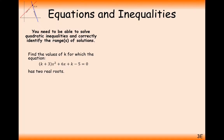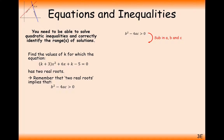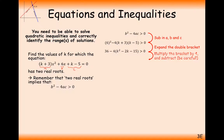Moving on to a tougher but very common exam question: find the values of x for which the equation has two real roots. If we've got two real roots, b squared minus 4ac must be greater than 0. We pull out the values of a, b, and c — a is the coefficient of x squared, b is the coefficient of x, and c is the constant — substitute those into the inequality, expand the brackets, and divide through by 4.